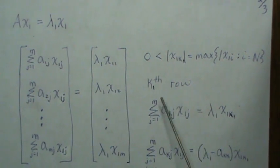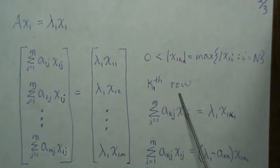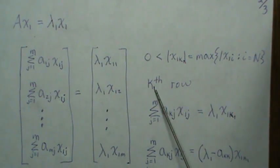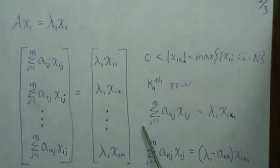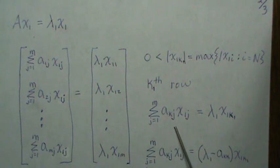So we're going to look at the maximum of all these and we're going to call it x sub one k sub one. So let's assume it's in the k-th row and the subscript means we're dealing with the first eigenvector.